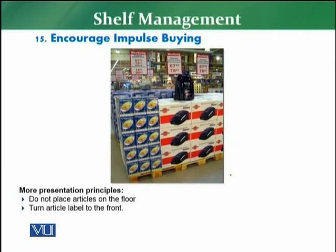The next principle — the second last principle — is to encourage impulse buying. What you need to understand in this principle is that you need to make sure that customers buy impulse products. The objective of the retailer is to place all impulse buying products at the locations where the customer is going to visit in the store — all the traffic areas. Normally all the impulse products are placed in the aisles or at the point of sale.